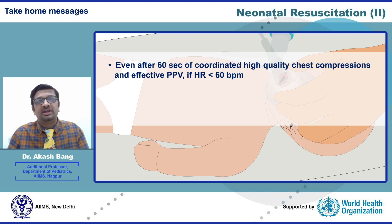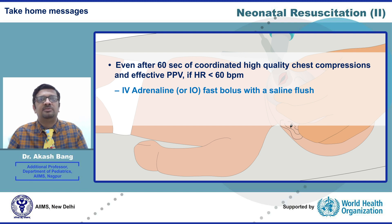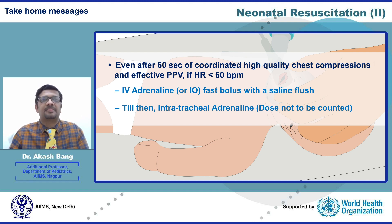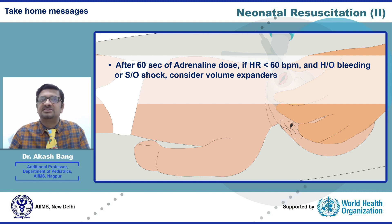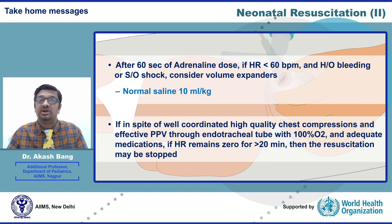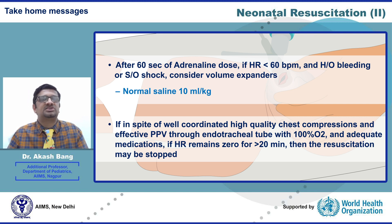Even after 60 seconds of coordinated high-quality chest compressions and effective PPV, if heart rate remains below 60, IV adrenaline should be given as a fast bolus with a saline flush. Until IV access is obtained, you may give intratracheal adrenaline, but that dose should not be counted. After 60 seconds of the adrenaline dose, if heart rate is less than 60 and there is history of bleeding or signs of shock, consider volume expanders — basically normal saline 10 ml per kg. If heart rate remains zero for more than 20 minutes despite all efforts, resuscitation may be stopped. Thank you.